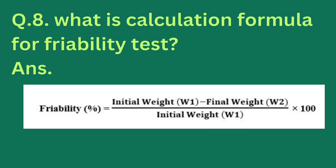Next question: What is the calculation formula for friability? Answer: Friability equals initial weight minus final weight, divided by initial weight, multiplied by 100.